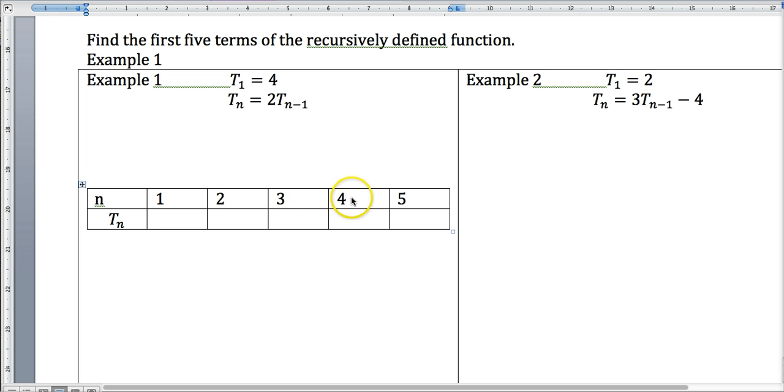This is the first locker, this is the second locker, third locker, fourth locker, fifth locker, and then what happens is that that is what we call the n. And then t sub n is what is inside each one of those lockers.